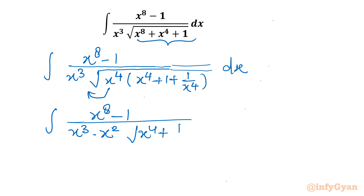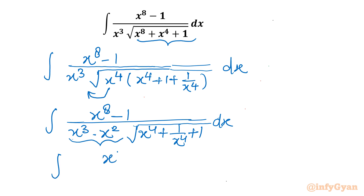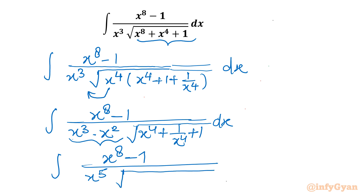So it will be (x^8 - 1) over x^3 times x^2 times the square root of x^4 + 1/x^4 + 1, dx. Now using the exponent property, x^3 times x^2 is x^5. So it would be (x^8 - 1) over x^5 times the square root of x^4 + 1/x^4 + 1, dx.